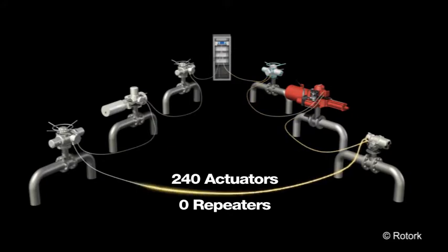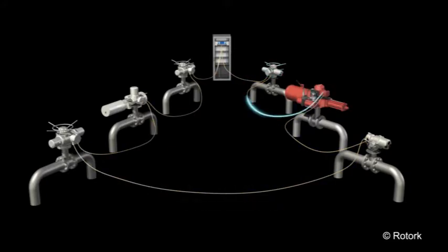Using the efficient Report-by-Exception protocol, control and monitoring signals are passed around the loop, which is constantly monitored for cable faults.